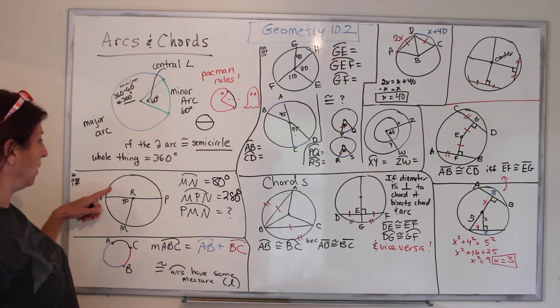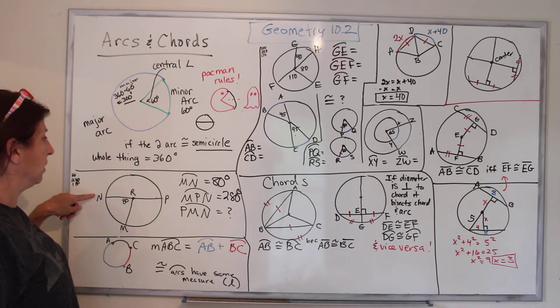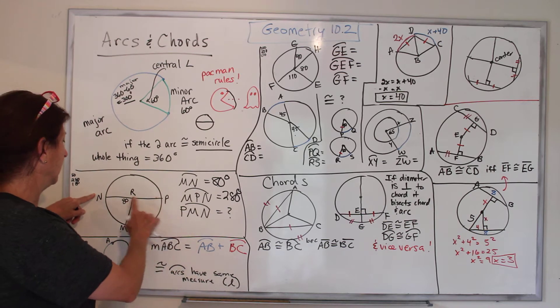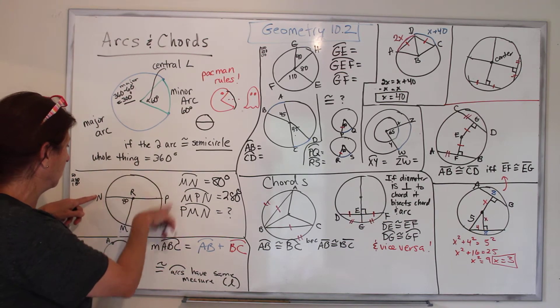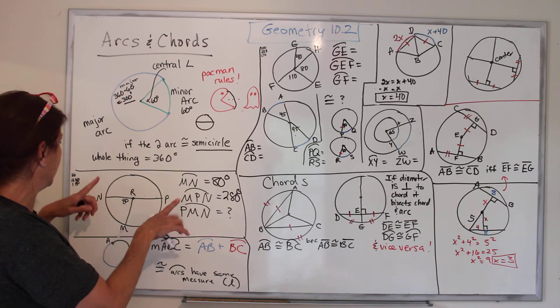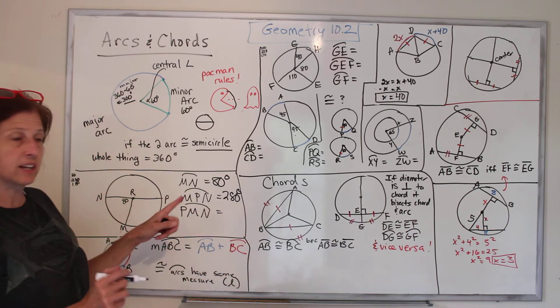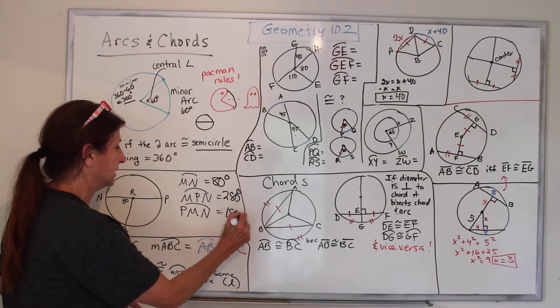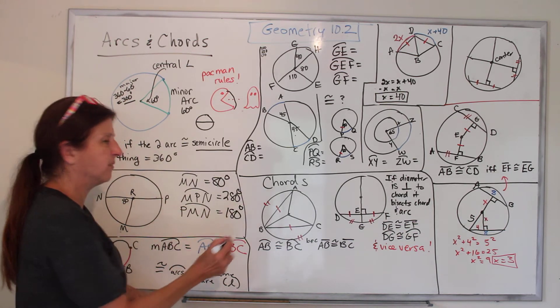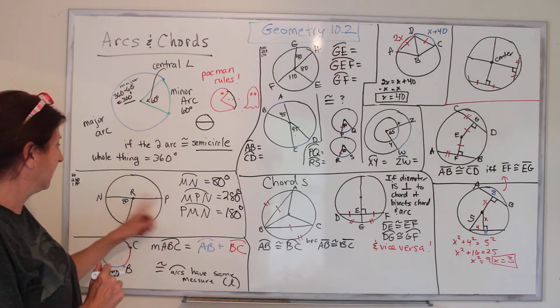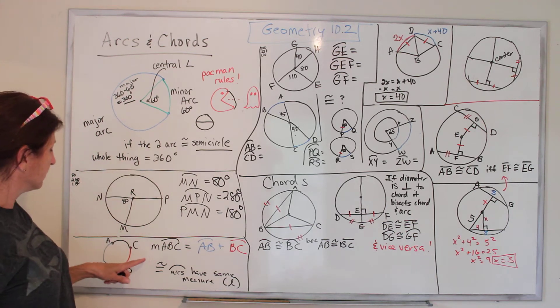You have to go around the whole head to get it. So what would it be? It would be 360 minus 80, which is 280. And then what would PMN be? We subtract out the 80, and also you can tell by looking at it, that looks like a straight line. It is. It's a semicircle. In your book, they say if things look like a line, they're a line. So let's do another one.